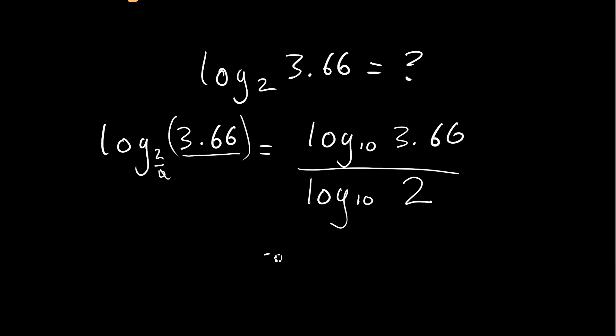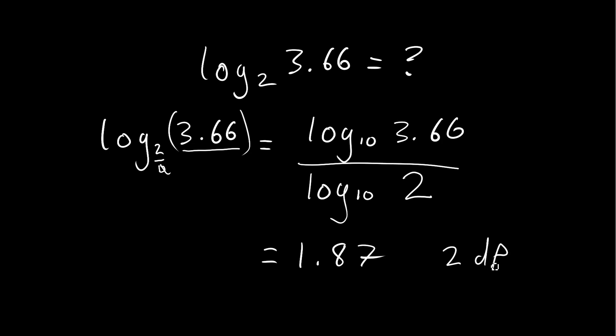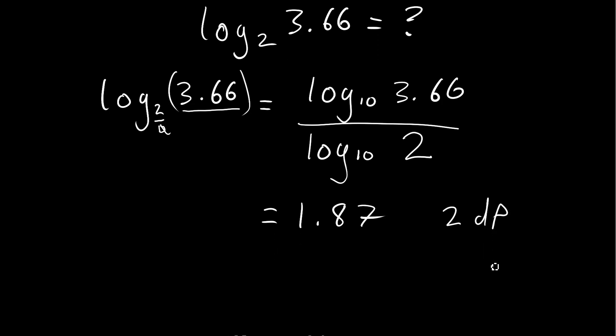So when we divide these two logs together, we get a value 1.87 to 2 decimal places. So this is equivalent of saying 2 to the power 1.87 is equal to 3.66.